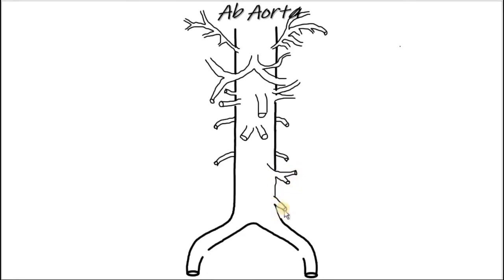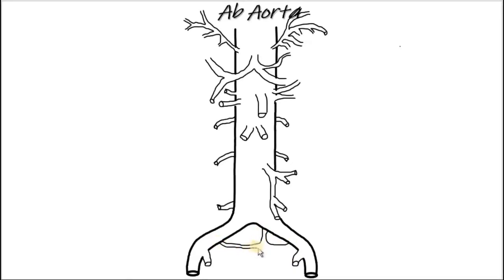The abdominal aorta is the largest artery in the abdominal cavity. As part of the aorta, it is a direct continuation of the descending aorta of the thoracic region.